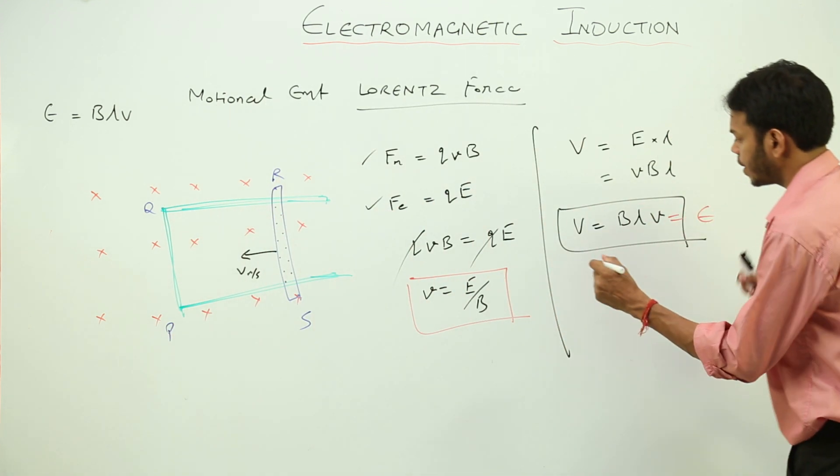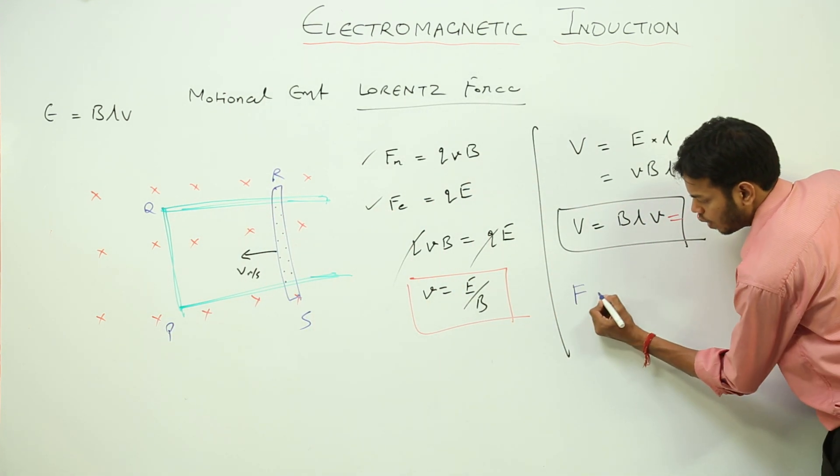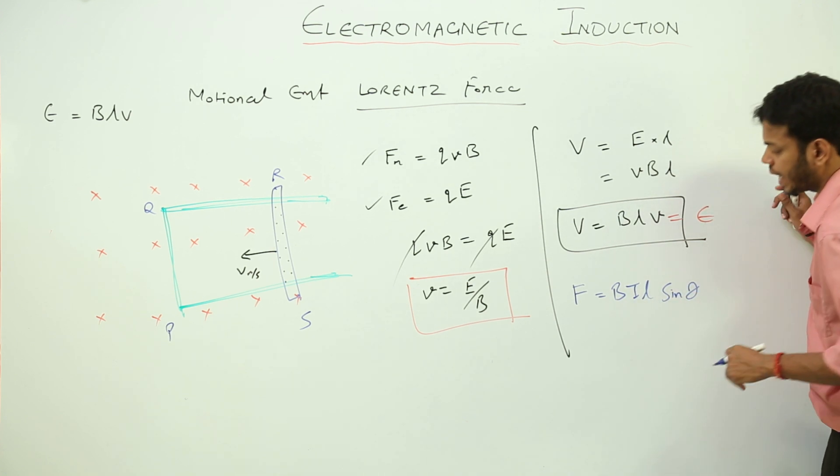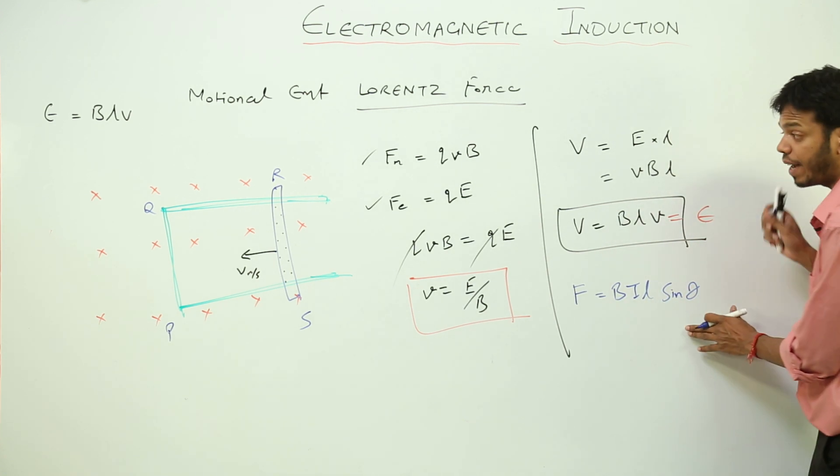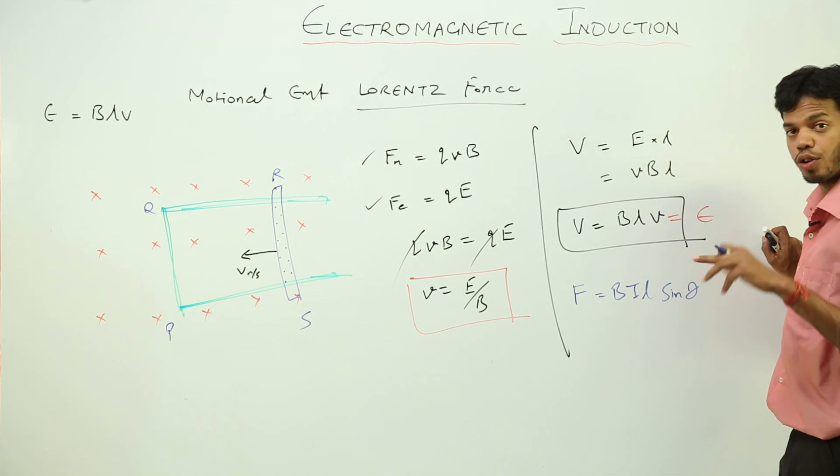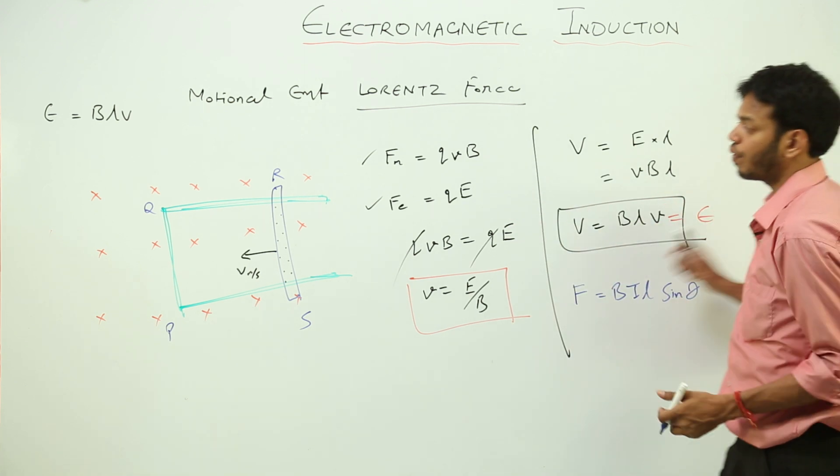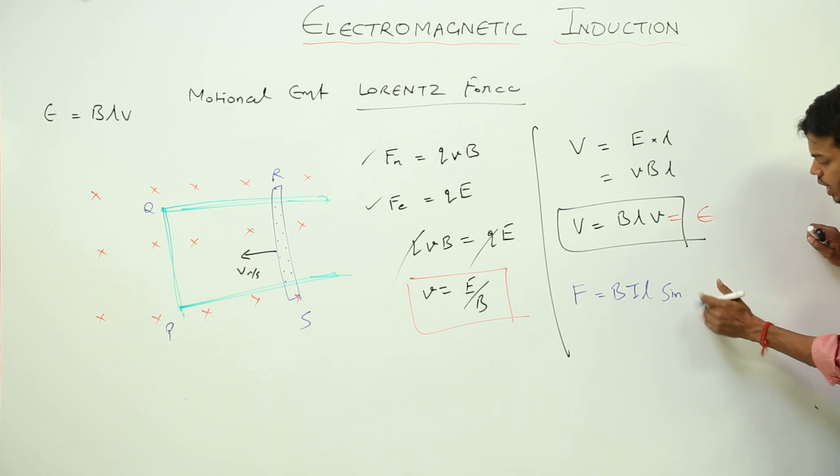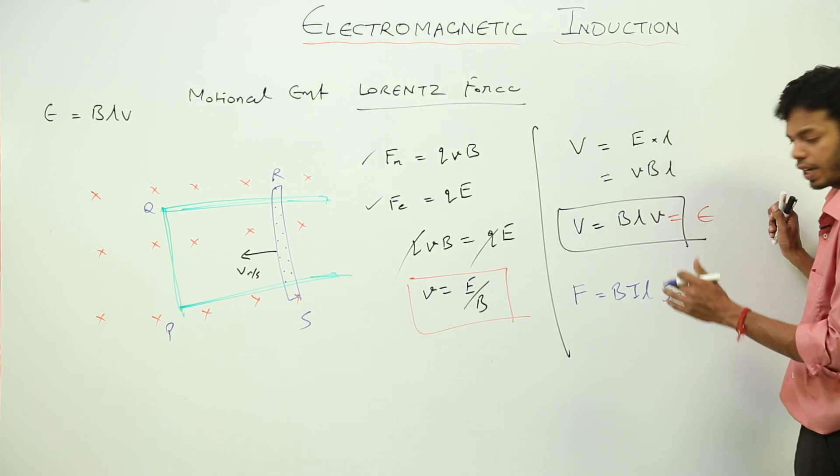I will be using different colour. Force is, the formula for force is BIL sine of theta. I am straight away replacing theta with 90 degree because theta is the angle between I, L cross B, that is length of the conductor and magnetic field, and they are perpendicular, so 90 degree. This is sin 90 which is actually 1.